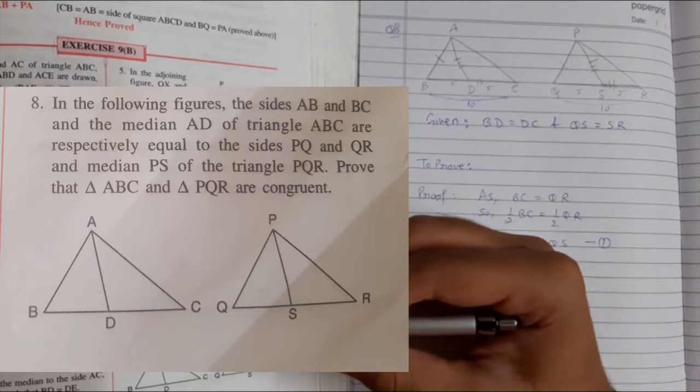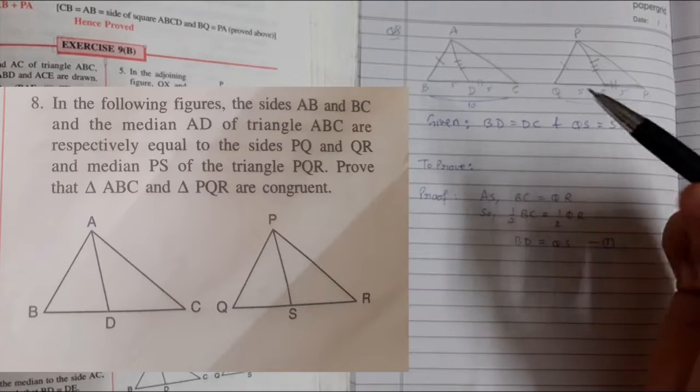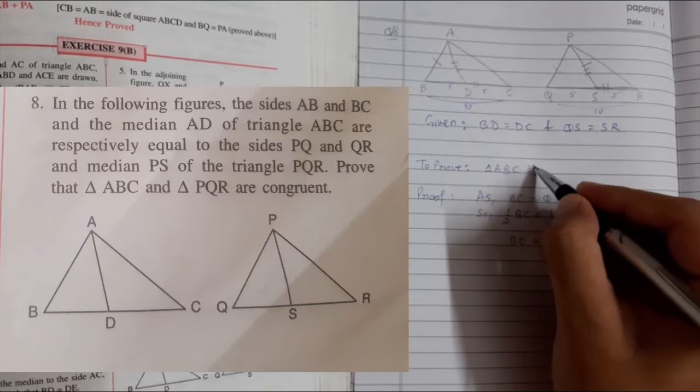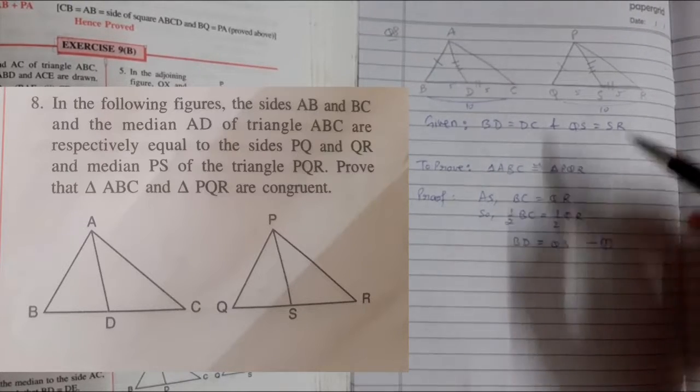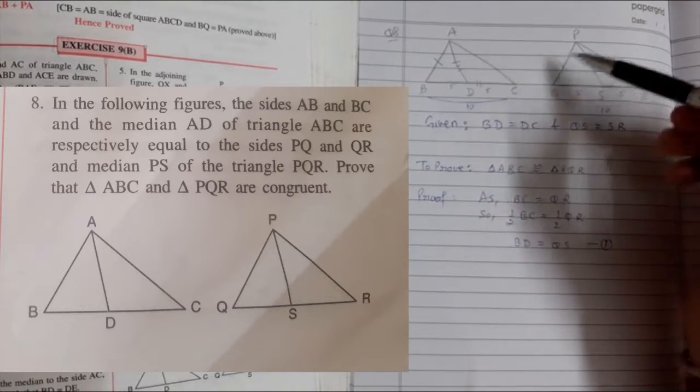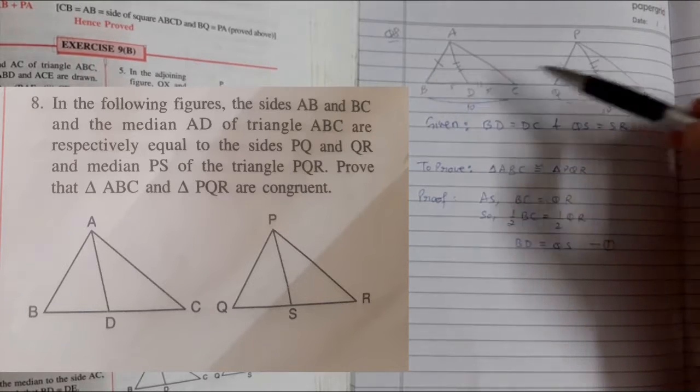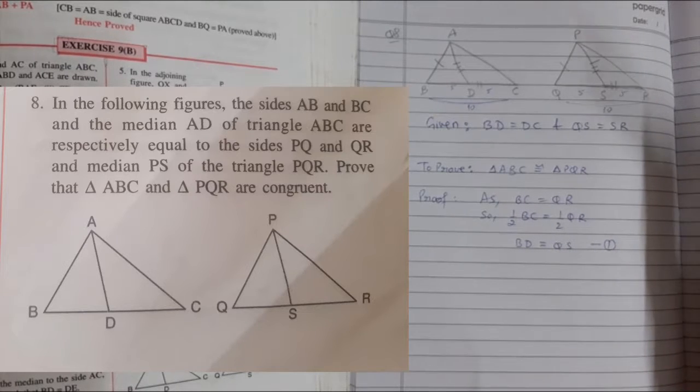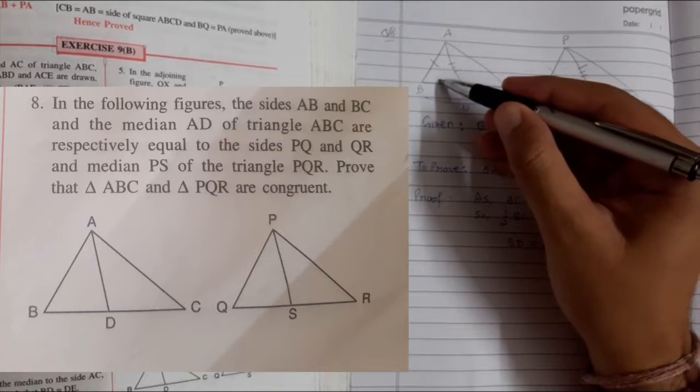Triangle ABC is congruent to triangle PQR. We cannot prove the whole triangle congruency initially since we don't have three matching elements yet. Let's focus on the given information first.